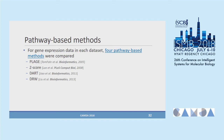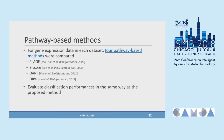We compared four pathway-based methods introduced in previous slides. For expression data in each dataset, these four methods transform a single gene expression profile into a pathway profile. Our proposed method integrates both gene expression and copy number data into one single pathway profile. The four comparison methods are PLAGE and Z-score — which treat pathways as sets of genes — and DART and DRW, which are graph-based methods utilizing gene-gene interactions.